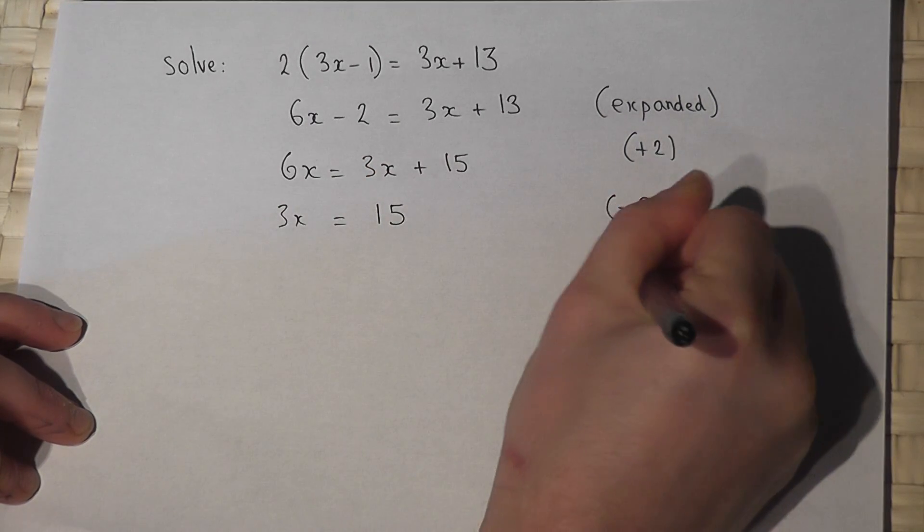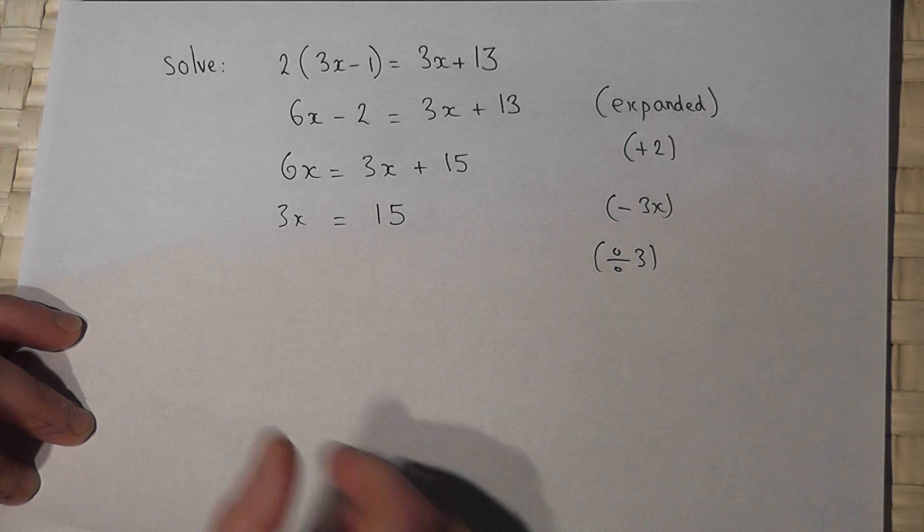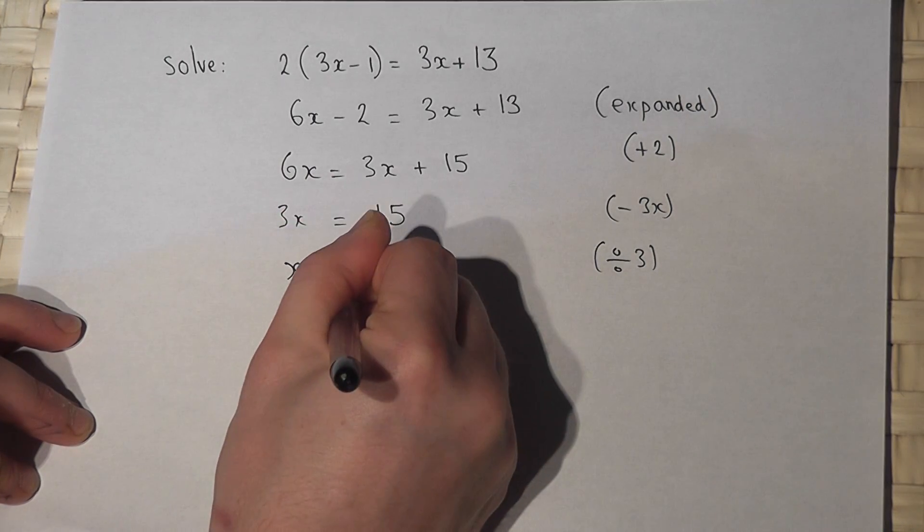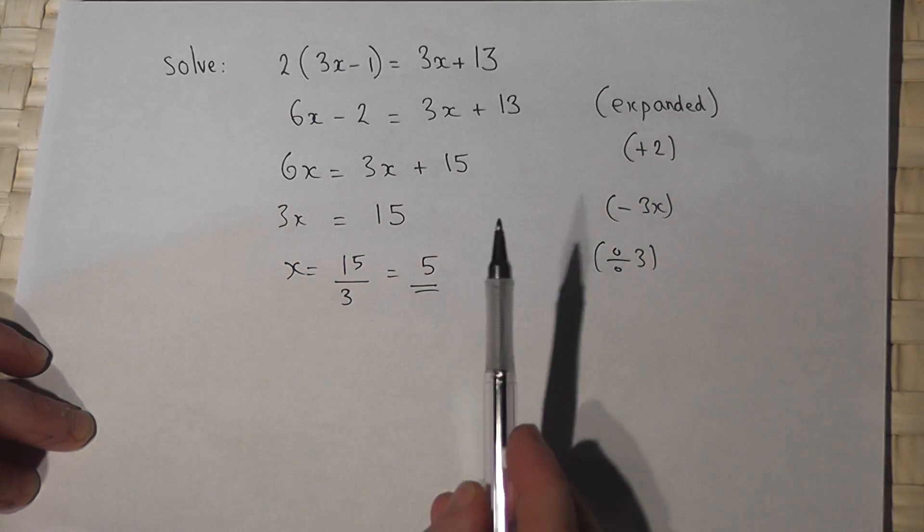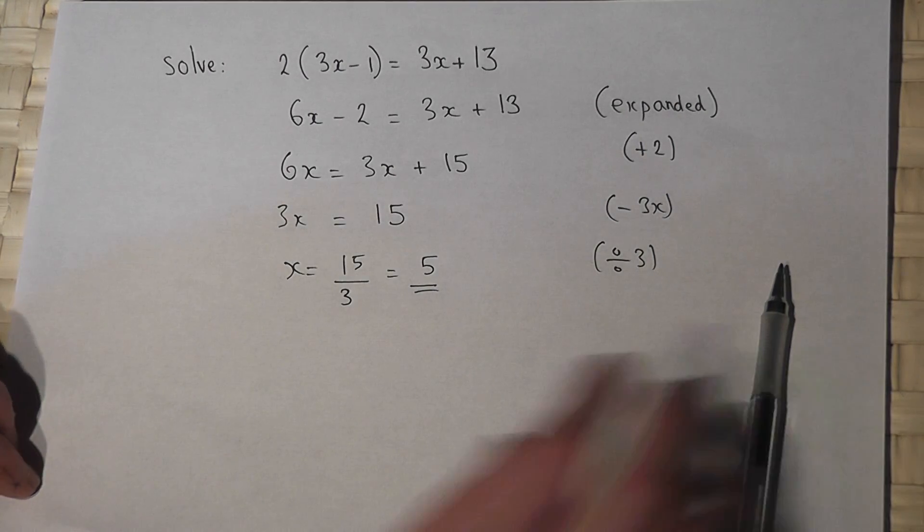I then divide by 3. So the answer is x equals 15 divided by 3 which equals 5. So the solution to the equation is x equals 5.